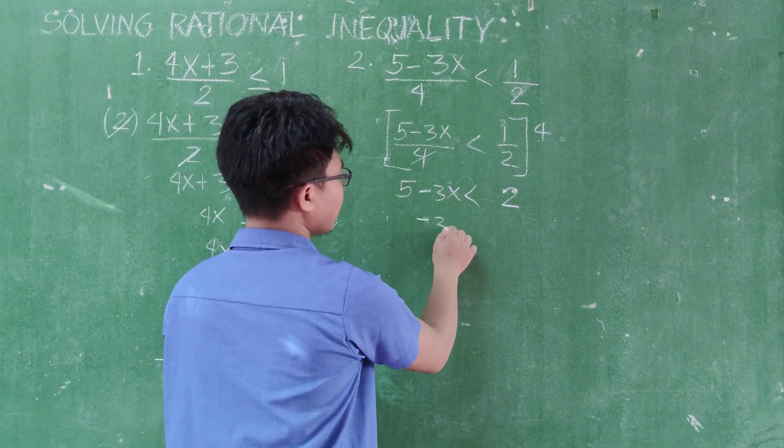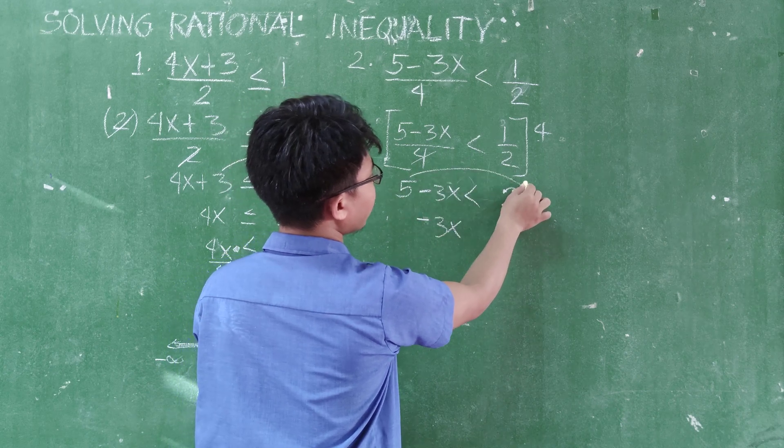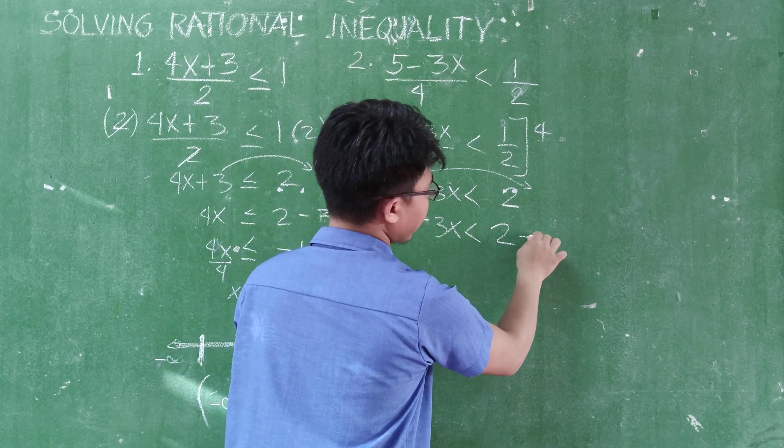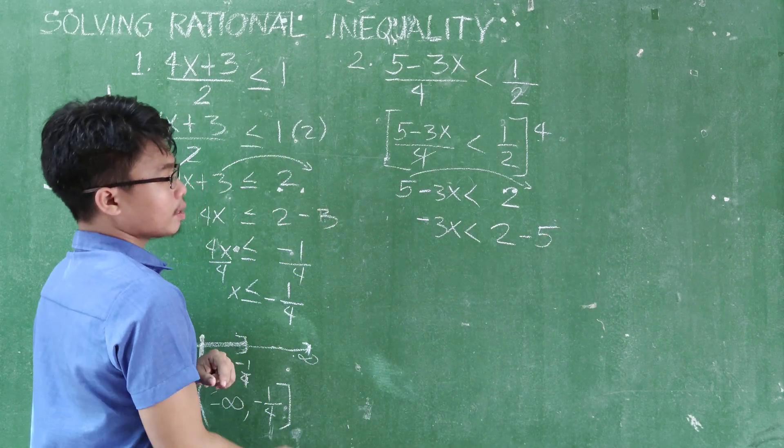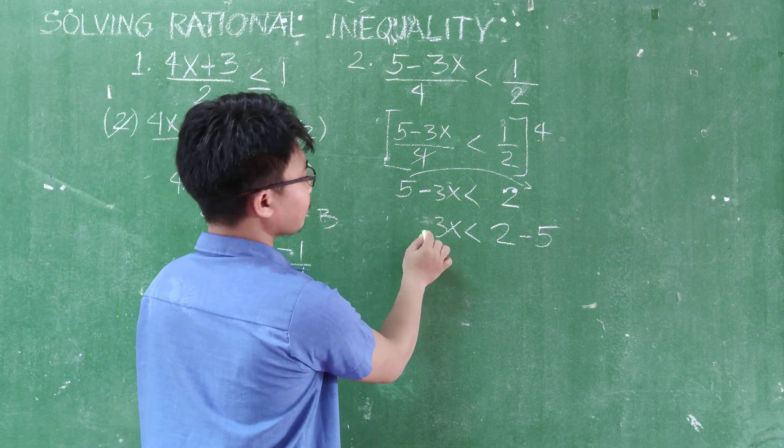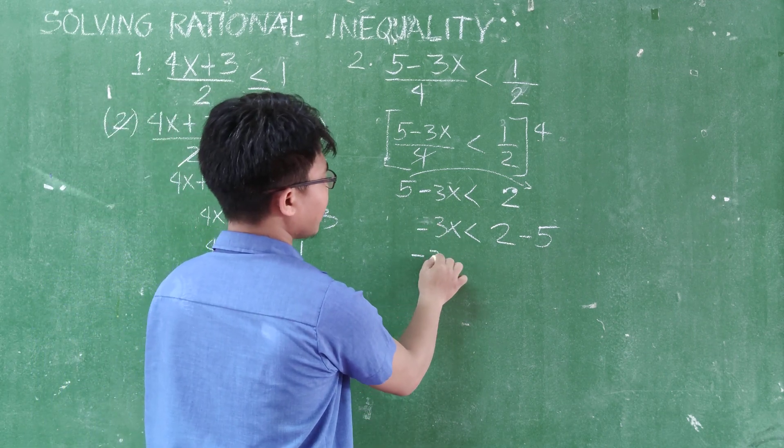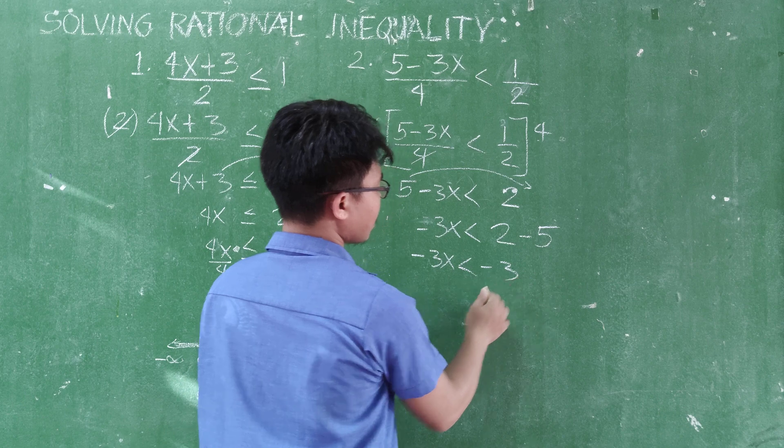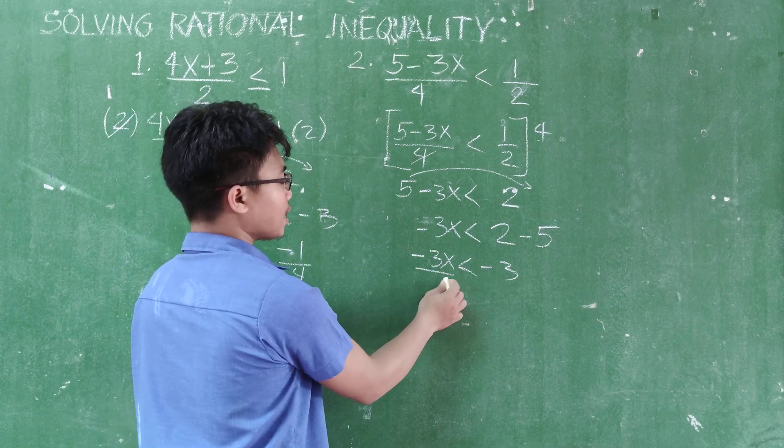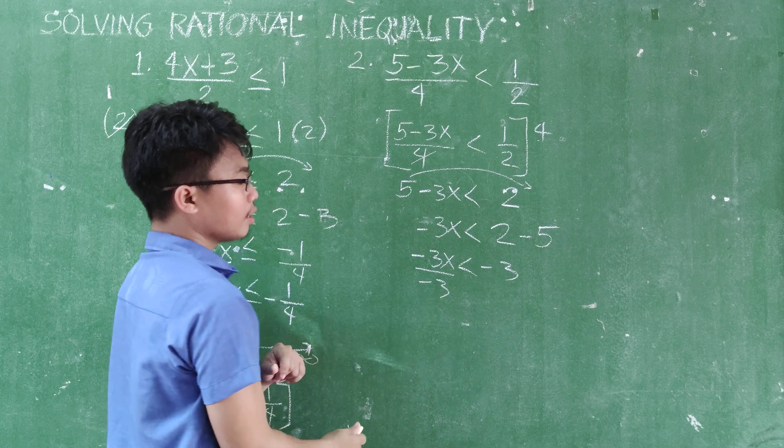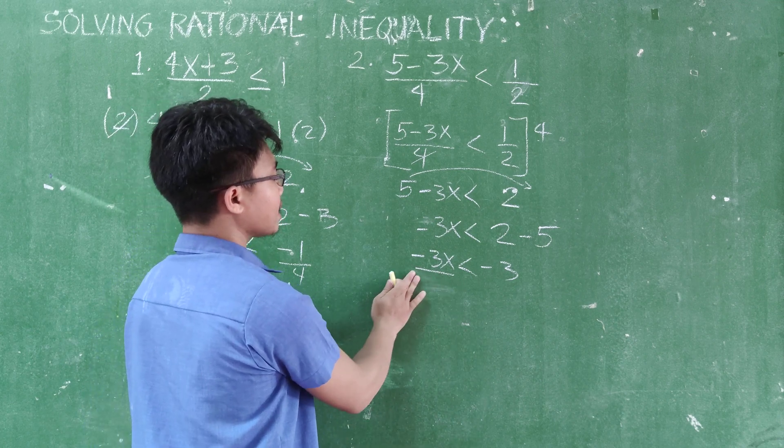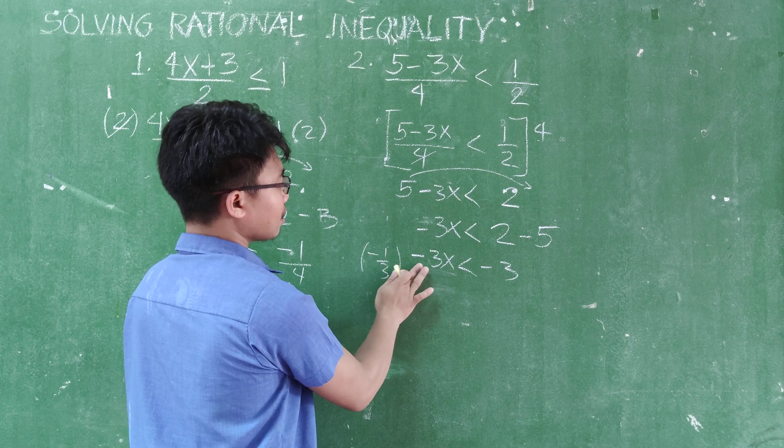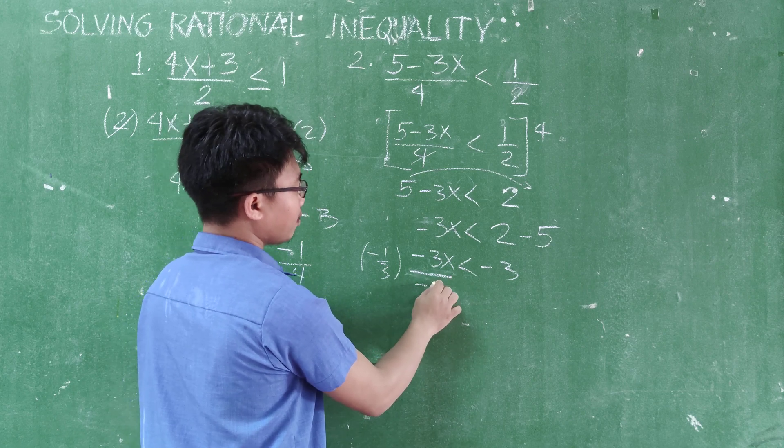So negative 3x on the left. And you are going to transpose the 5. Transposing 5, this is less than, will give you 2 minus 5. So since this is negative 3x, you keep the negative 3x there. Less than, and proceed. 2 minus 5, the answer is negative 3. So to get the value of x, divide both sides by negative 3. Or you can have this. Anyway this is the same. So you multiply both sides by negative 1 over 3. So that is the same when dividing it with negative 3.